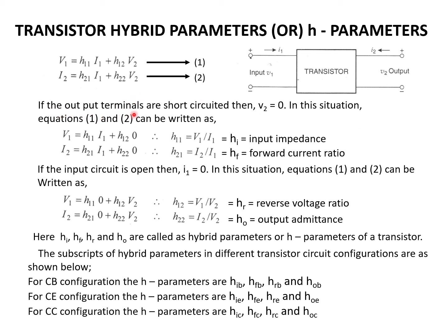If the output terminals are short-circuited — that is, a wire is connected between the two output terminals — then the output voltage becomes 0. In this case, the equations give H11 = V1/I1, which is the input impedance, since voltage divided by current is resistance (or impedance for AC signals). H21 = I2/I1, which is the forward current transfer ratio, since output divided by input is forward.